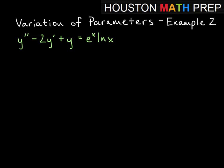Here's our second example problem of variation of parameters. So we have y double prime minus 2y prime plus y equals e to the x times ln of x.